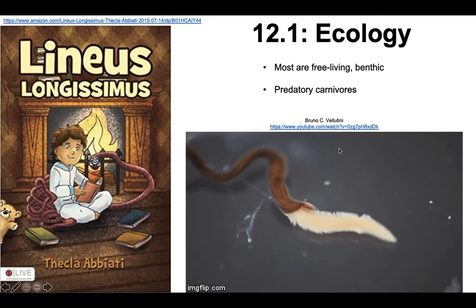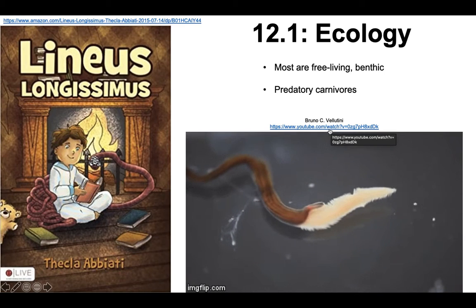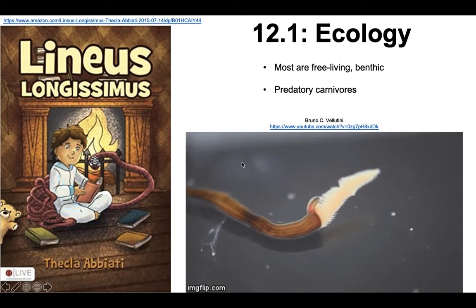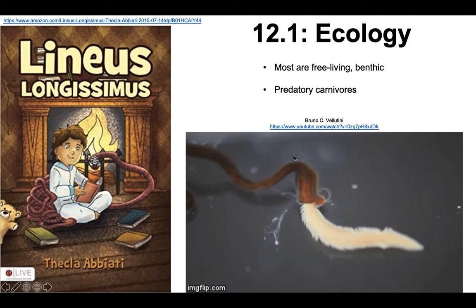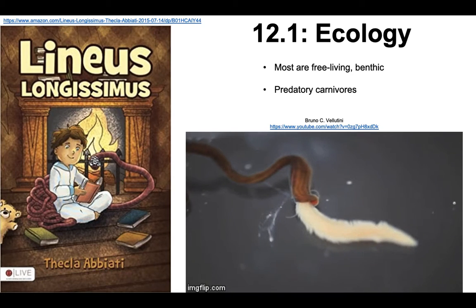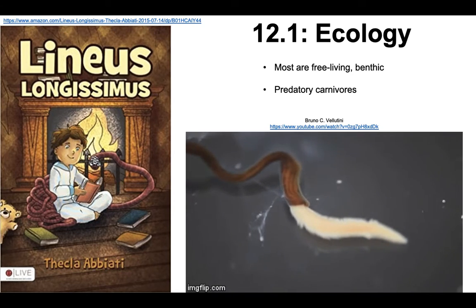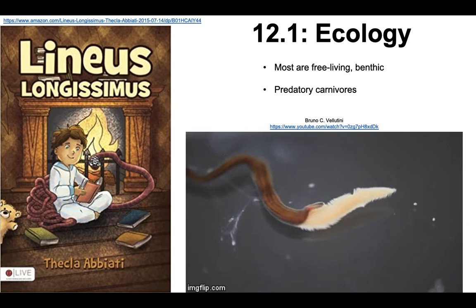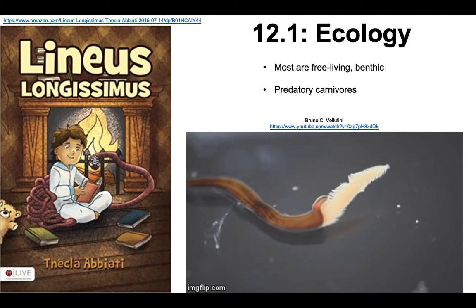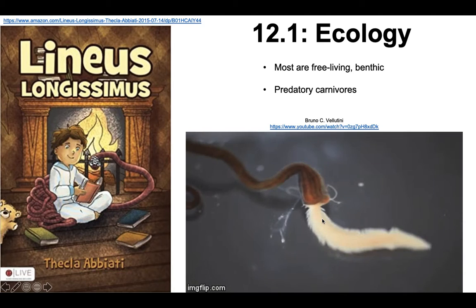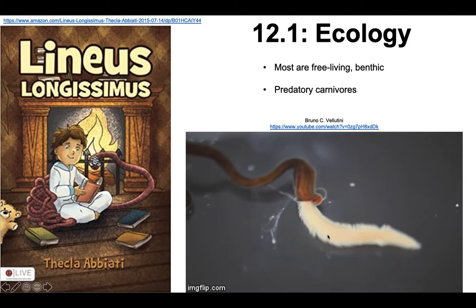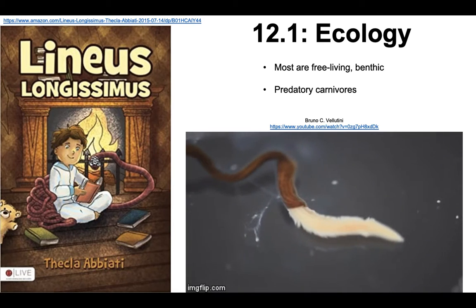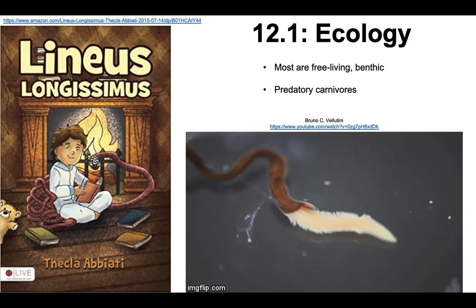I'm going to include a link to this video at the end. Bruno has a bunch of really cool videos of nemertians on YouTube that I'll suggest you watch, with links on Schoology. Most nemertians are specialist carnivores — they'll eat only a certain particular species or type. Some eat only annelid worms, some only eat crustaceans, some only eat a certain species. That's what I mean by specialist carnivore.